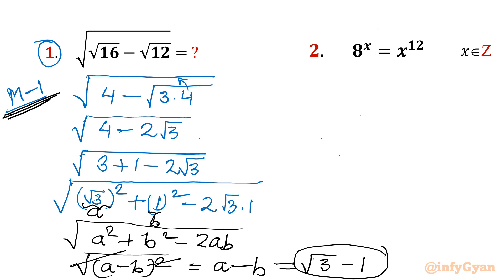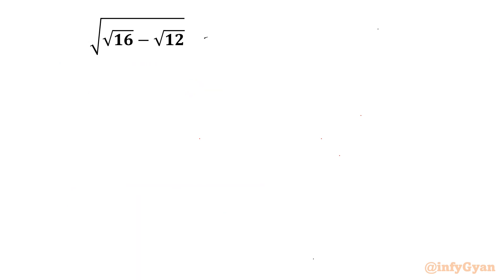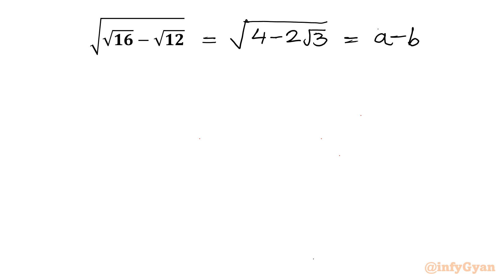Now let us solve using method number 2. I will consider the expression equal to (a − b), first writing it as 4 minus 2 root 3. Note that root 16 is greater than root 12, so a − b will always be positive. I have assumed a and b are both positive numbers.